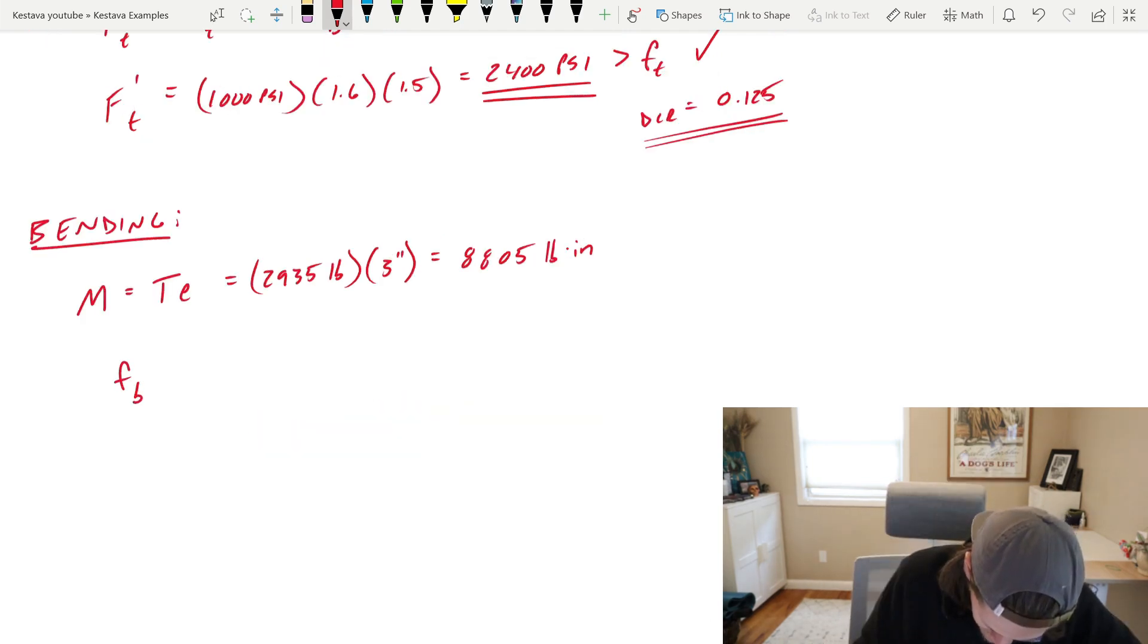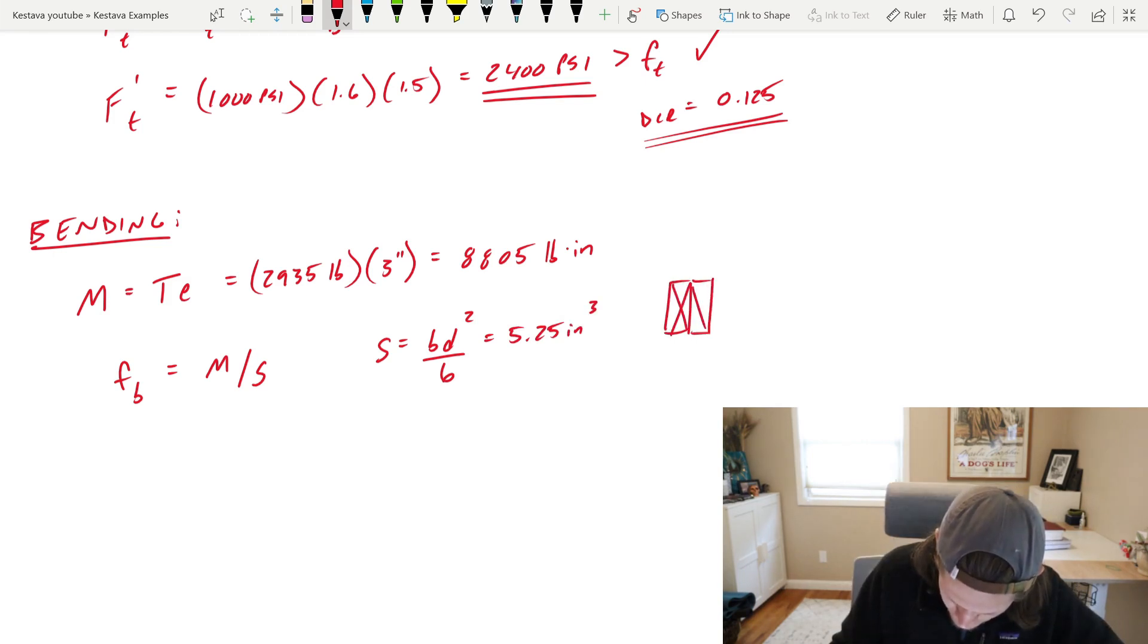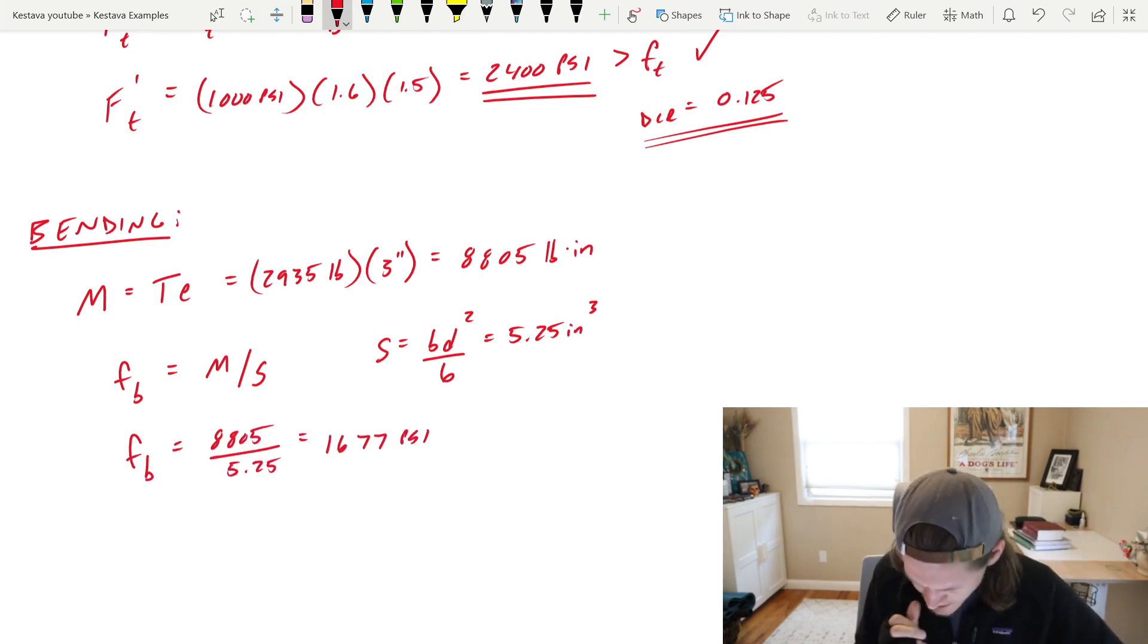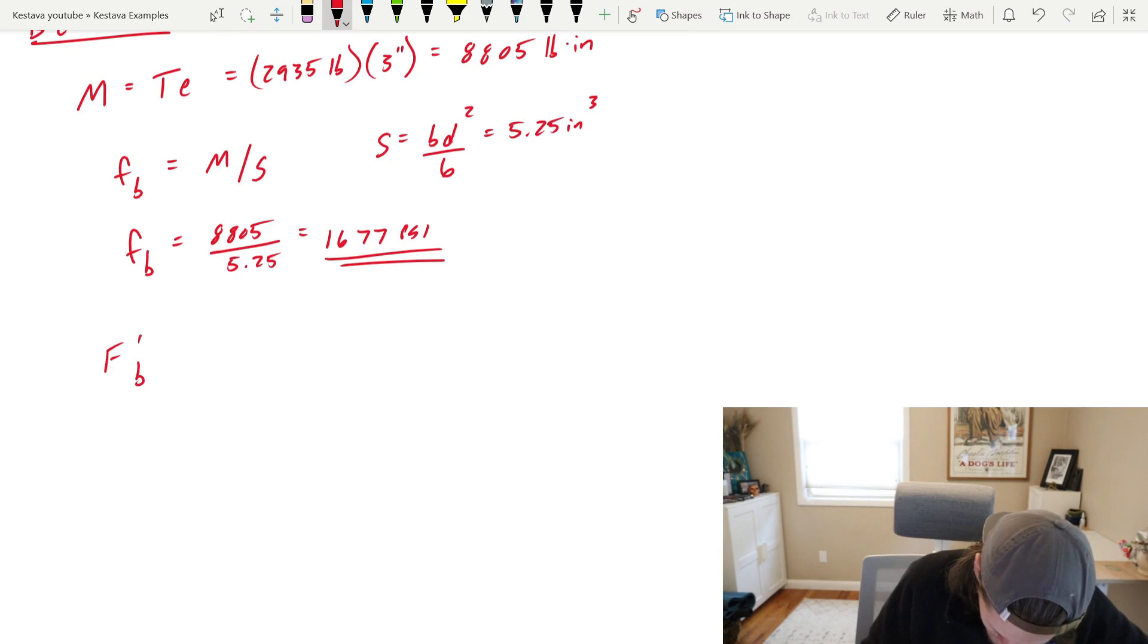Moment is going to be equal to T times E. That gets us 8,800 pound inches. The actual bending stress, F sub B, is going to be equal to M over S. S is equal to BD squared over six, which pumps out 5.25 inches cubed. And that again is derived from your two buys. You get the following for FB, almost 1700 PSI.